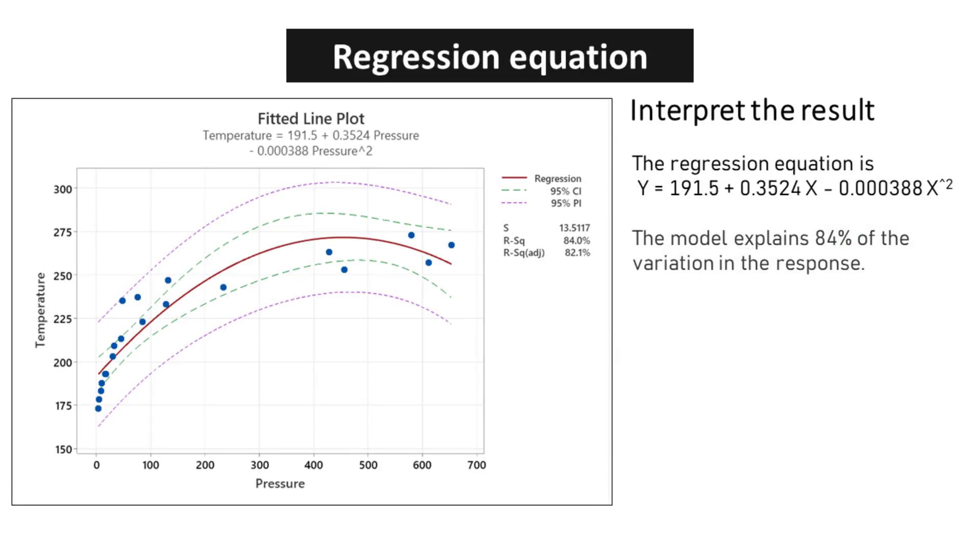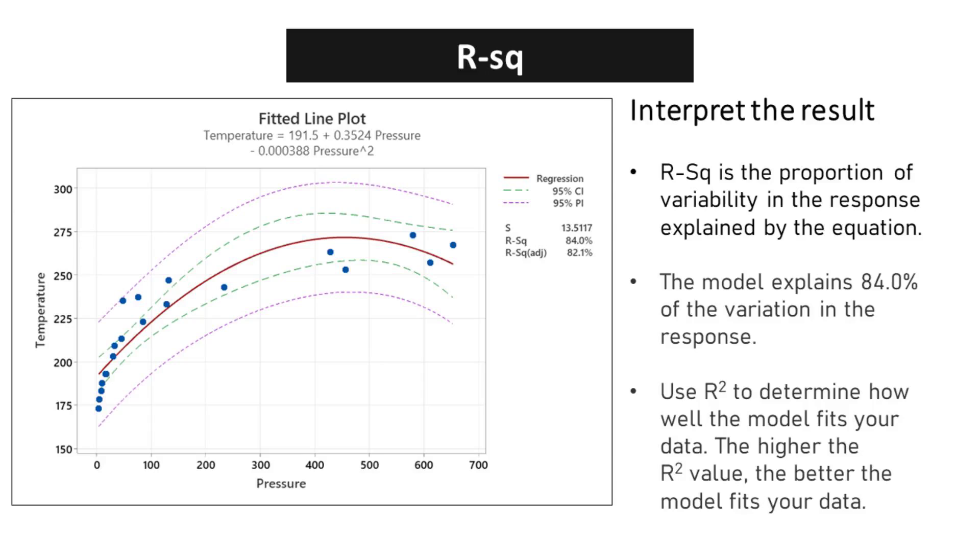The model explains 84% of the variation in the response. This is a remarkable achievement and speaks volumes about the effectiveness of the statistical techniques employed. R-squared is a crucial metric that helps us determine how well a model fits our data. It represents the proportion of variability in the response variable that is explained by the equation.